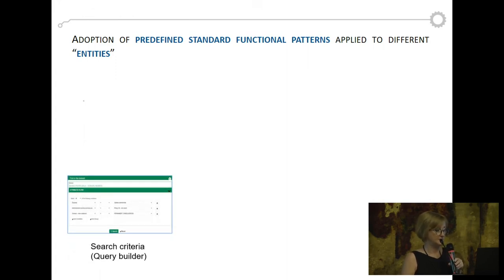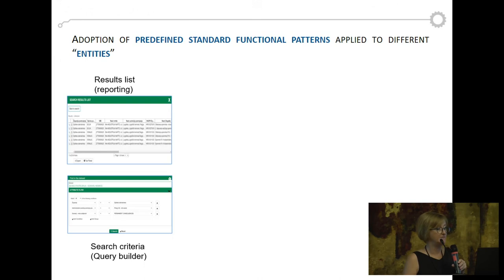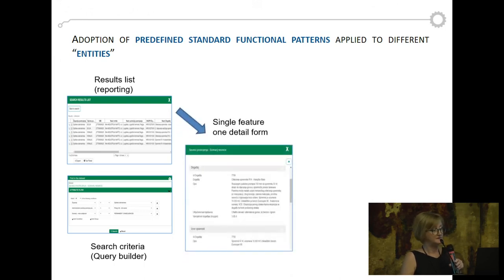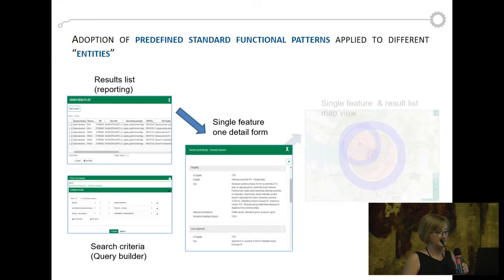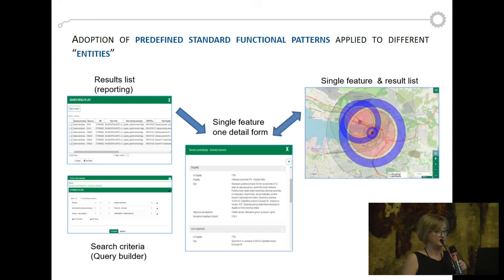What we do is a complex query builder. We can manage many criteria and group criteria. The report list is built as a flat structure, but for a single feature we can use a detailed form that describes all the data in their complex way — we even have tables inside our detailed form. This is the part where we see the results of our search, and directly through the reporting view I can click and pass to a map to see what I found with my query.